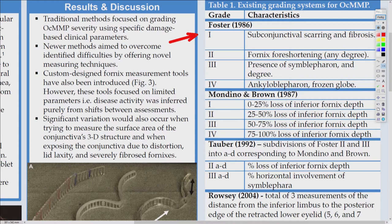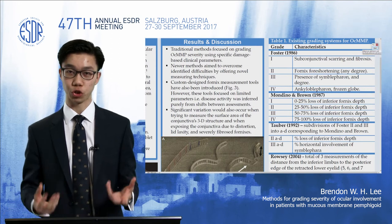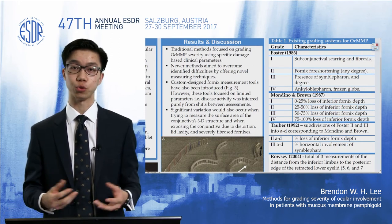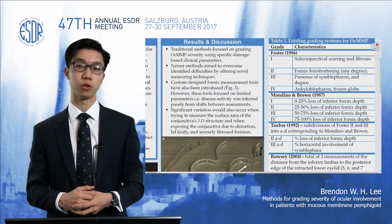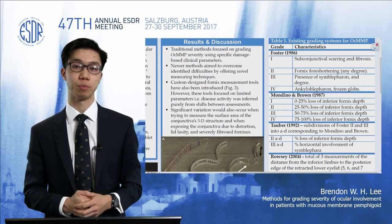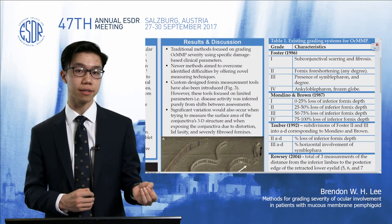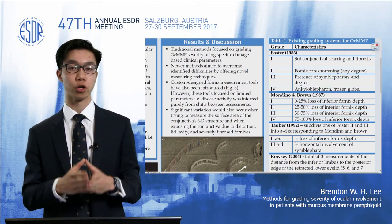This was followed by Mondino and Brown in 1987, which looked at percentage loss of inferior fornix depth and again gave a four-grade system. In 1992, Tauber conglomerated these two scores together to create a more comprehensive one that looked at disease signs and percentage loss. What you can notice from these scores is that they are mainly damage-based, looking at the area of the eye involved. This causes limitations because it doesn't look at the current disease activity, such as inflammation occurring in the eye — only at what has already occurred in terms of damage.